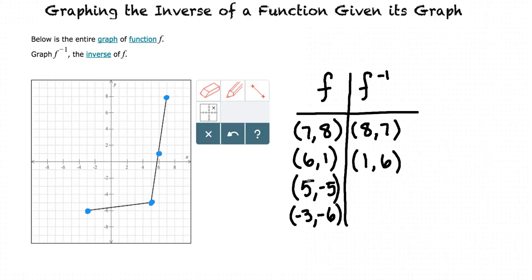By swapping the x and y values of each of these points in our original function, we get points for our inverse.